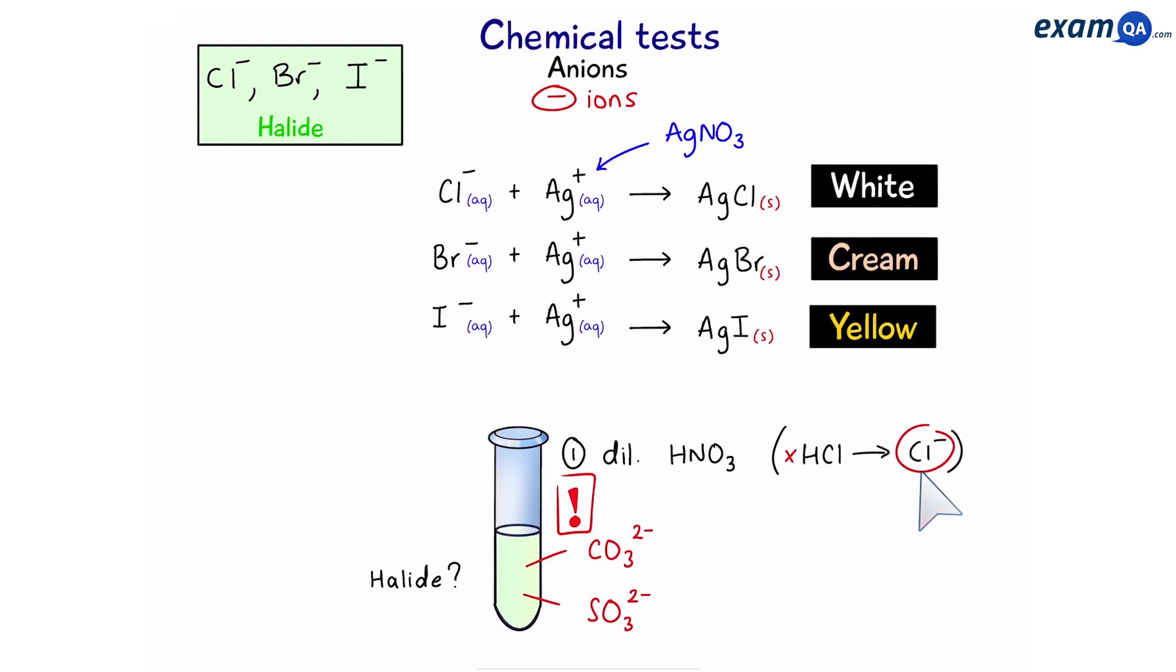The reason we don't use hydrochloric is because hydrochloric acid itself has chloride ions. So we'll be adding the thing that we're trying to find out. It'll be quite funny if we add chloride ions and at the same time we're testing if it's got chloride ions.